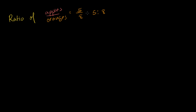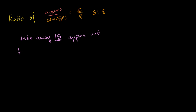That's the ratio of apples to oranges. Now the next thing that I know about this problem is that when I take away 15 apples, the ratio of apples to oranges becomes 1 to 4.